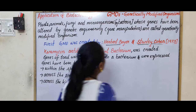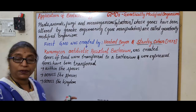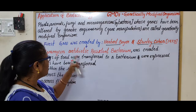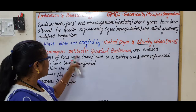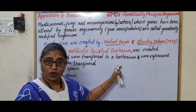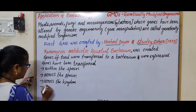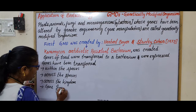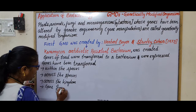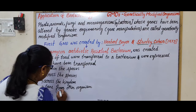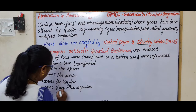Genes can be transferred within species, across species, and across kingdoms. As seen in the toad-to-bacterium example, eukaryotic genes were transferred to a prokaryote. Such genes from other organisms are called exogenous genes or transgenes.